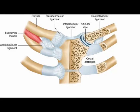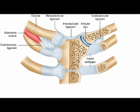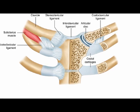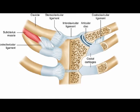At the sternoclavicular joint, the articular disc is flat and nearly circular, located between the articulating surfaces of the sternum and the clavicle.